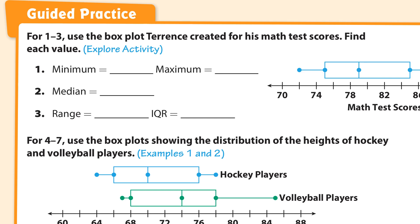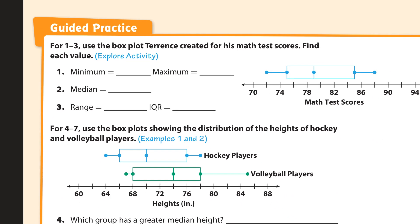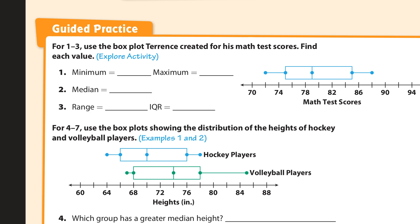Hi and welcome to the guided practice for lesson 10.2. I'm going to zoom out a little bit so we can answer these questions. What is the minimum value? The minimum value is the end of the whisker right here — this is a whisker and this is the box — so this is the minimum value, that looks like it's going to be 72, because in between 70 and 74 is 72.